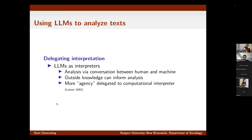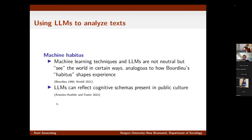Thinking more theoretically about this approach, we can think of these models as performing some type of interpretation. We can potentially have a conversation with a large language model about our qualitative data. The models, unlike other approaches, don't just have the corpus at hand but potentially have some outside knowledge from their pre-training. I argue we can think of this as delegating more agency to the computational approach in a kind of Latourian way — having the large language model take part in interpretation in a richer way than previously possible. This type of approach raises more questions about how the model actually perceives the data being analyzed.